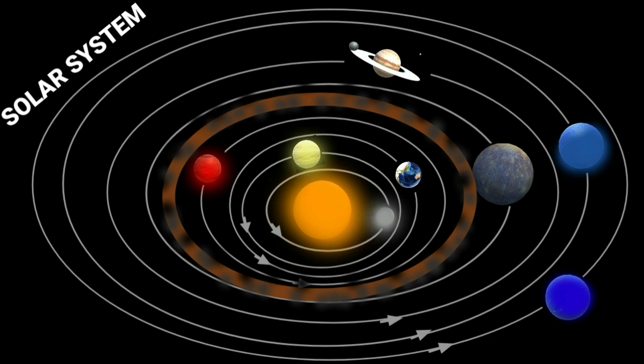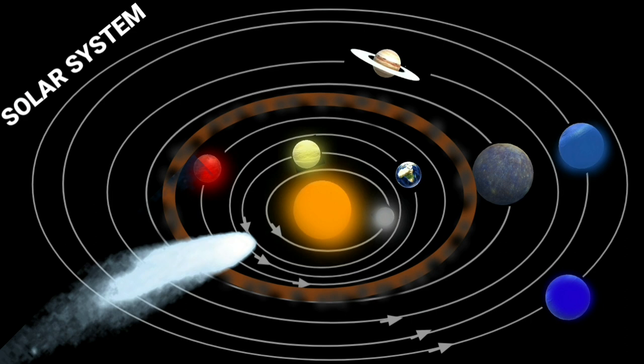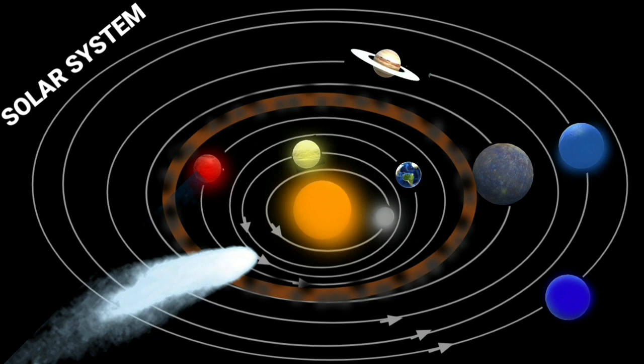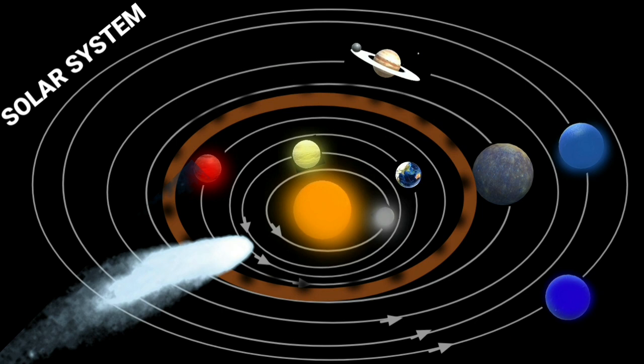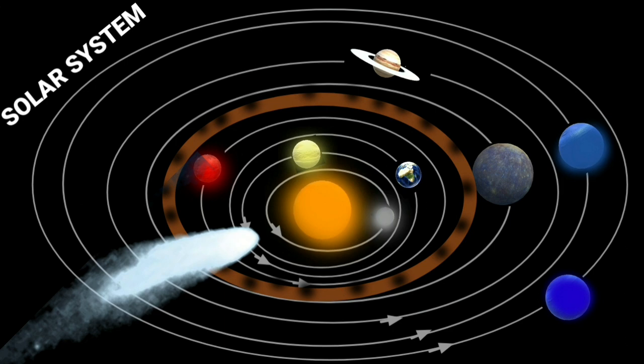Comets are also members of our solar system. They revolve around the sun. A comet appears generally as a bright head with a long tail. One of the examples is Halley's Comet, which appears after nearly every 76 years.